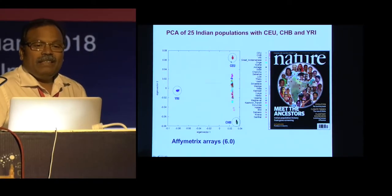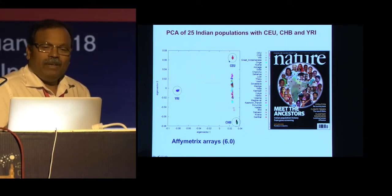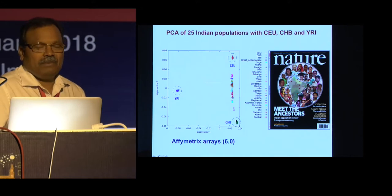Subsequently, we analyzed a large number of populations using the Affymetrix Array. As you see here, these are Indian groups, along with a European HapMap sample, an African HapMap sample, and a Chinese HapMap sample. This slide alone tells us how diverse Indian populations are. These three HapMap groups cluster together, suggesting they are more homogeneous compared to Indians, whereas each Indian group is very unique.